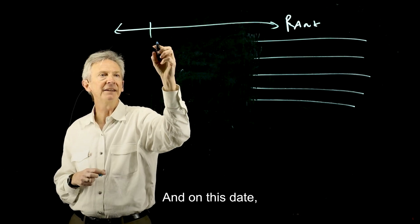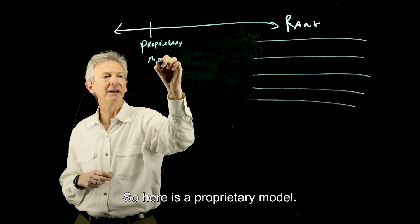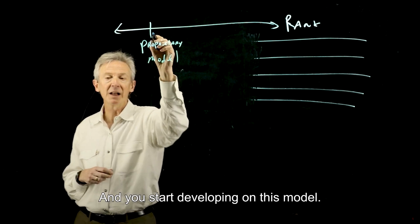That open source models are just behind in time to proprietary models. So if you would imagine a timeline, and on this date, a proprietary model comes out. So here's a proprietary model. And you start developing on this model.